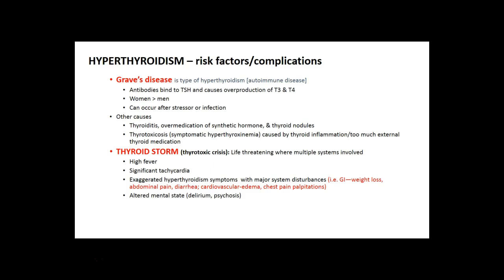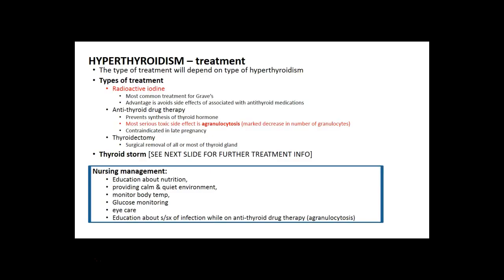The autoimmune version of hyperthyroidism is Graves' disease — remember you're going to run yourself into a grave. The life-threatening condition is called a thyroid storm. Patients get a supercharged exaggeration of all symptoms: high fever, significant tachycardia, weight loss, abdominal pain, diarrhea, cardiovascular issues with edema and chest pain, palpitations, and they can appear delirious or be in a state of psychosis.